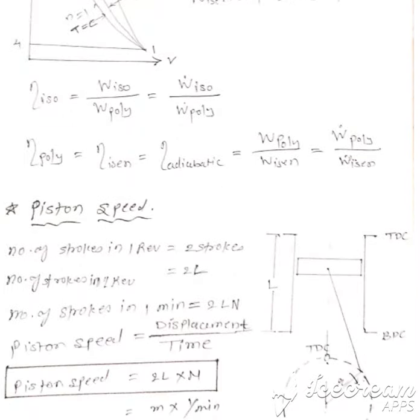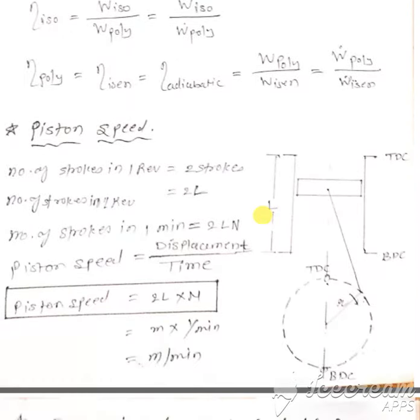Now the expression for piston speed. Consider this is TDC, this is BDC. The piston reciprocates inside the cylinder. This is the piston connecting rod and crank. The crank is rotating. This is the top dead center and bottom dead center of the crank. For the piston, this is the top dead center and this is the bottom dead center.